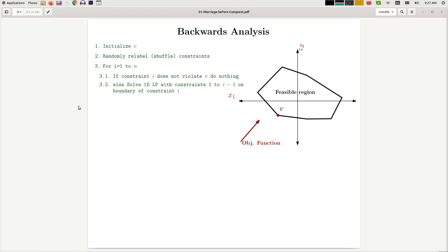So now let's see if we can prove the main claim that we had in the previous video. We have this randomized algorithm where the constraints are randomly shuffled, and we want to claim that the probability that step 3.2 runs is at most 2/i.